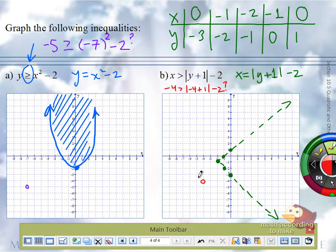False. Negative 4, careful, should get false. Negative 4 is not bigger than negative 1. Negative 4, negative 4 is outside of this V shape. It made it false, so where do I shade? Inside. Inside.